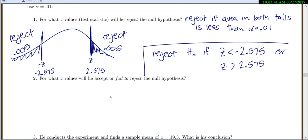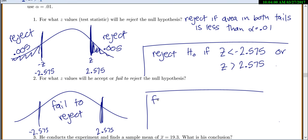And for what values of z will he accept or fail to reject the null hypothesis? Well, it's just the exact same thing. We've already done our work. Here's my negative 2.575. 2.575. If you reject if you're in the tails, that means you'd fail to reject if you're in the middle. So we'll fail to reject the null hypothesis if z is between those two values. Negative 2.575 is less than z is less than 2.575.